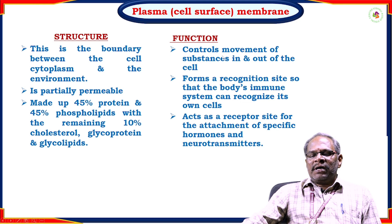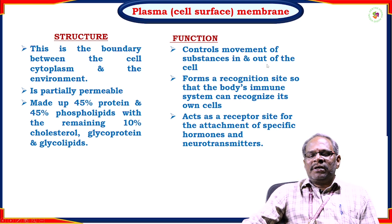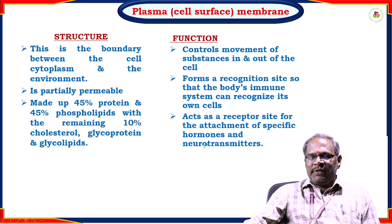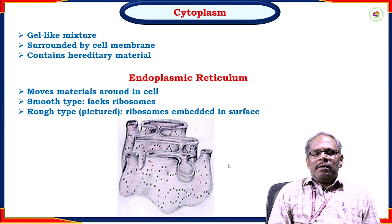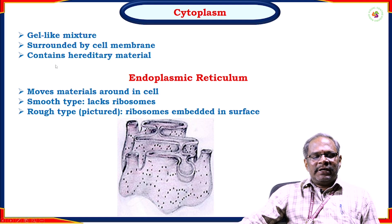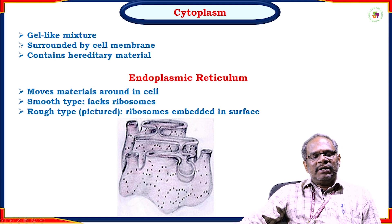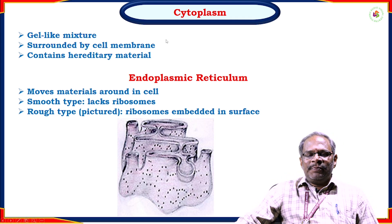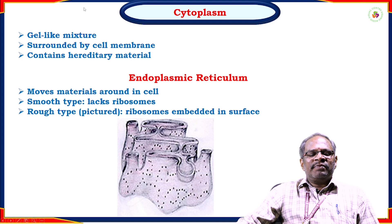The plasma membrane is made up of 45% protein and 45% phospholipids, with the remaining 10% being cholesterol, glycoproteins, and glycolipids. Major functions: controls the movement of substances in and out of the cell, forms a recognition site so the body's immune system can recognize its own cells, and acts as a receptor site for the attachment of specific hormones and neurotransmitters. The cytoplasm is a structureless, gel-like material inside the cell surrounded by the cell membrane, containing the glycolytic pathway which generates energy in the form of ATP.